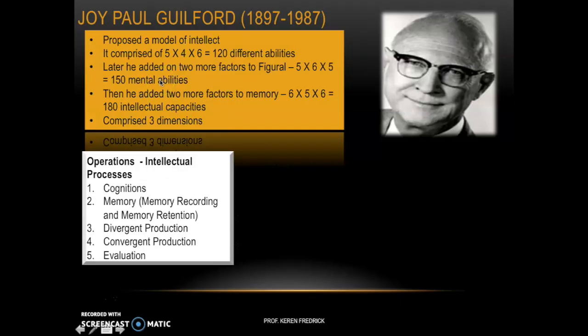The first dimension is operations — your intellectual processes. Operations include cognition (understanding and discerning), memory (encoding, storage, and retrieval), divergent production (thinking beyond the box and generating multiple solutions), convergent production (narrowing down to a single solution), and evaluation (judging situations). These are essentially the mental processes occurring in the brain.